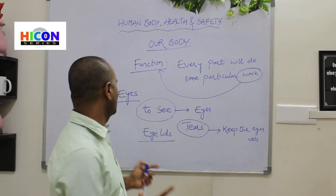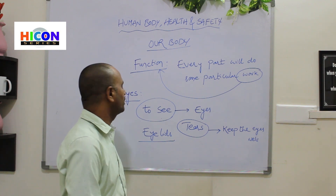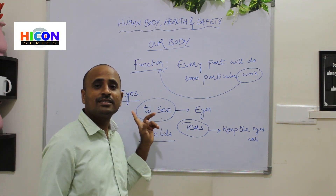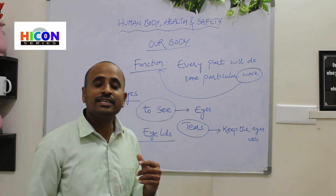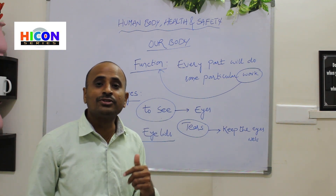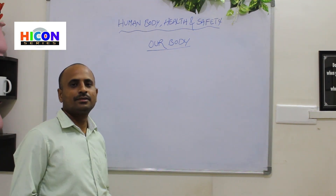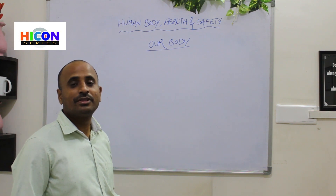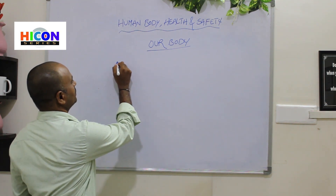This is about our eyes. The eyes are the first part in our head. What is the function of our eyes? To see. We can see with our eyes. Eyes are used for seeing. Next, we will discuss about the function of the next part — ears.